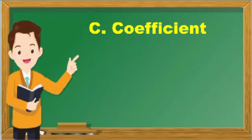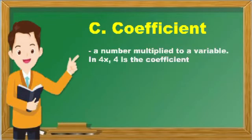Next is coefficient: a number multiplied to a variable. In 4x, 4 is the coefficient.